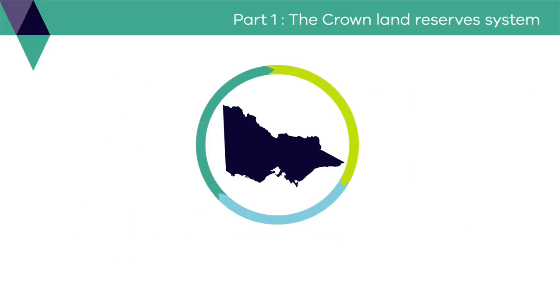Part 1. The Crown Land System. Crown Land is land that remains in government ownership. For most of the 19th century, the government sold Crown Land to stimulate development and settlement of Victoria. In the latter half of the 19th century, the government recognised that certain lands should be kept in public ownership and it began to reserve Crown Land for public purposes such as parks, schools and hospitals.